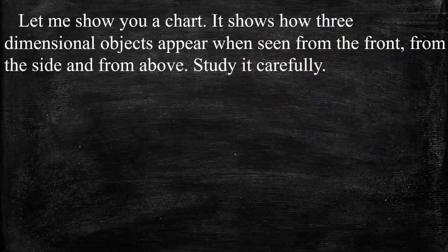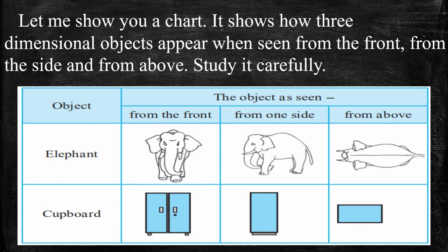Students, let me show you a chart. It shows how 3-Dimensional Objects appear when seen from the front, from the side, and from above. Study it carefully. The first object is an Elephant. From the front you can see it looks like this. From one side, the Elephant looks like this. And from the above view, you can see it like this.